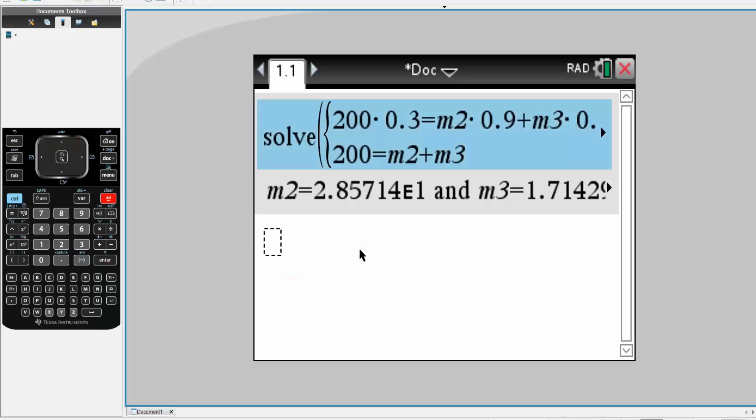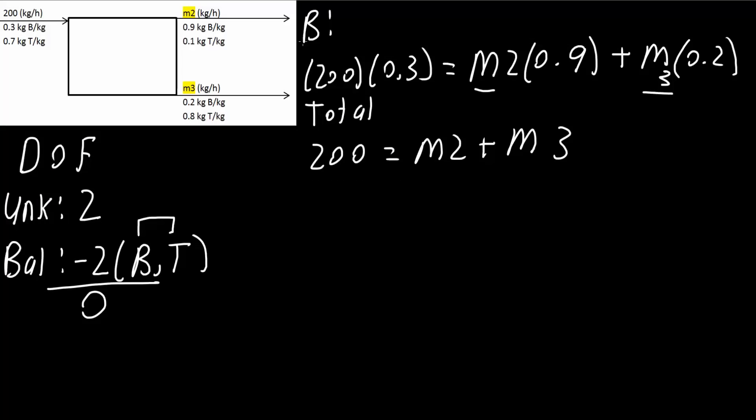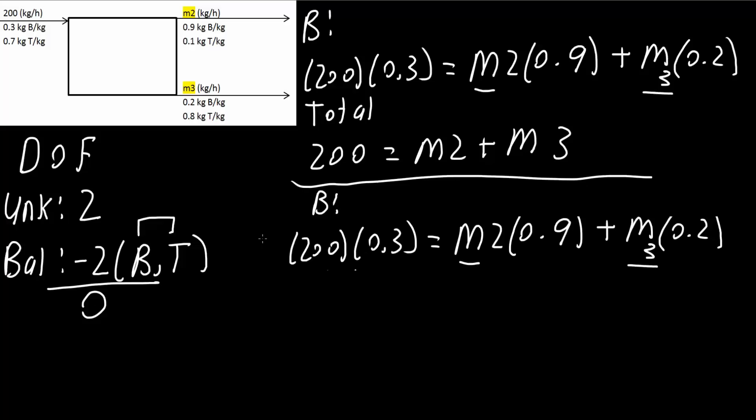Now, I will solve this question using the second method. We did a B balance and a total balance, but I could also do a B balance and a T balance, or even a T balance and a total balance. This is just to prove it. I'll do B and T, but I could also do T and total.